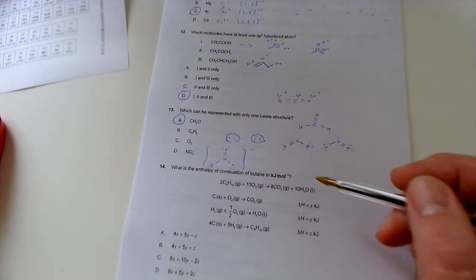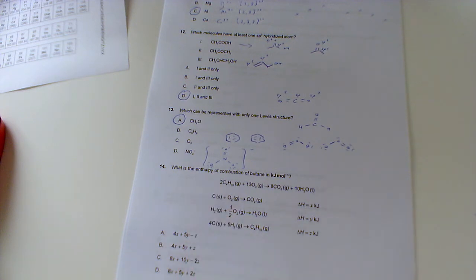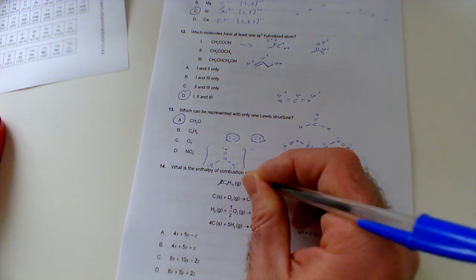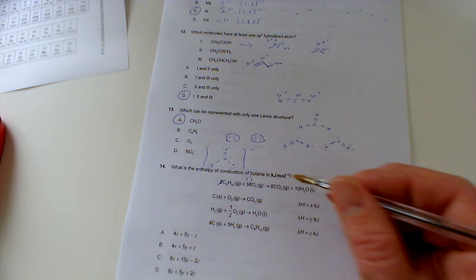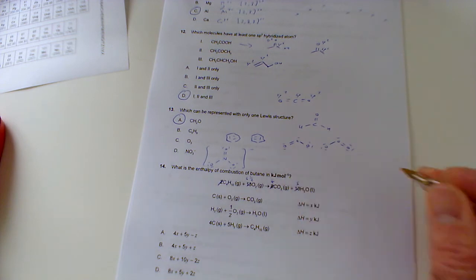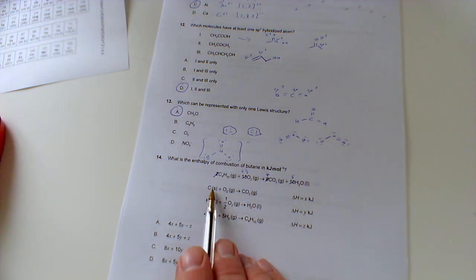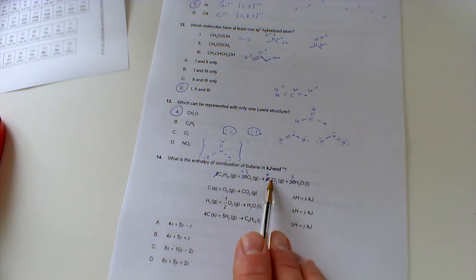Number 14: what is the enthalpy of combustion of butane in kilojoules per mole? We've got two butanes reacting with 13 oxygen to make 8 carbon dioxide and 10 waters. Now that's in bold, that's a bit of a warning. I think that's trying to warn us that we need to halve this because we're burning two butanes and if it's per mole we should only burn one. So let's take that down to one, that comes down to six and a half. Wouldn't be a good idea actually scratching them out on the paper in case you decided to change your mind, but I'm fairly confident on this one. Eight halved is four, ten halved is five.